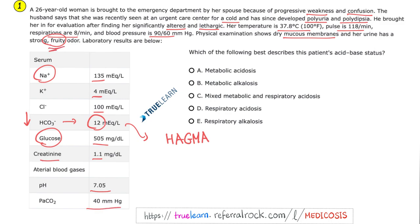I hope by now, since we have the fruity odor, the hyperglycemia, the low pH and the low bicarbonate, that you recognize that this is diabetic ketoacidosis. One of the causes of high anion gap metabolic acidosis.